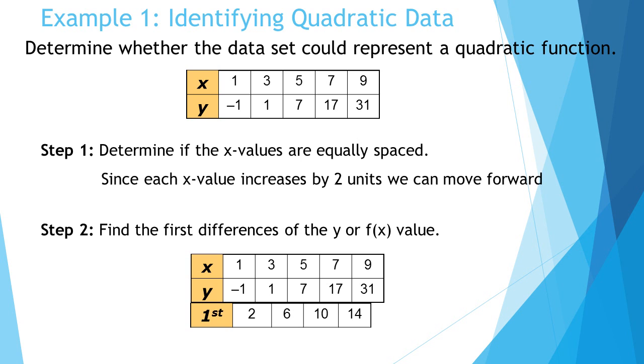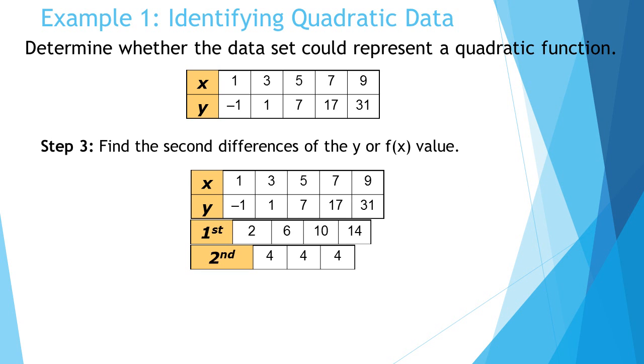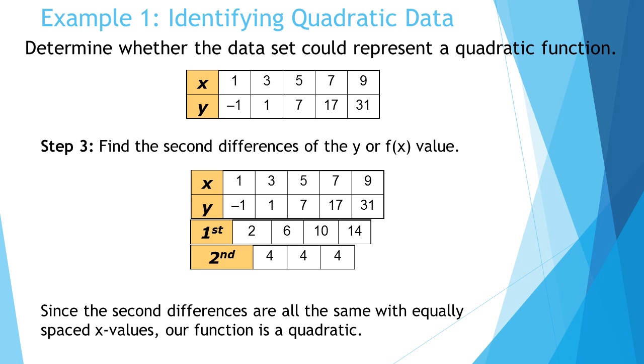Now that we have our first differences, we need to analyze our second differences. You're taking the values from your first difference and determining the differences between those. From 2 to 6 is 4, from 6 to 10 is 4, from 10 to 14 also 4. Since the second differences are all the same with equally spaced x values, we can determine that this function with the data they provide is quadratic.